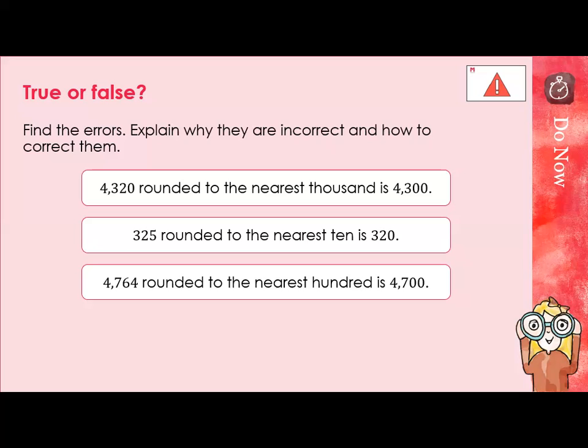Okay, well let's have a look at that top question then. 4,320 rounding to the nearest thousand is 4,300. Well, well done if you were able to identify that the number hasn't been rounded to the nearest thousand. If I am rounding a number to the nearest thousand, how many zeros is it going to have at the end of it? It's going to have three. It's going to have a zero in the ones column, a zero in the tens column, and a zero in the hundreds column. Because it's a multiple of 1,000, 2,000, 3,000, 4,000, something like that. So well done if you're able to identify that mistake.